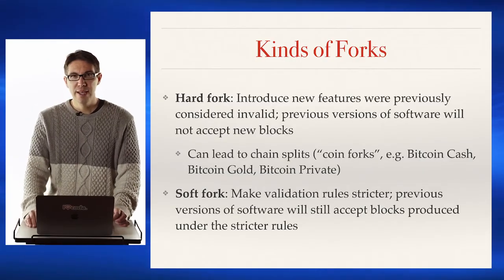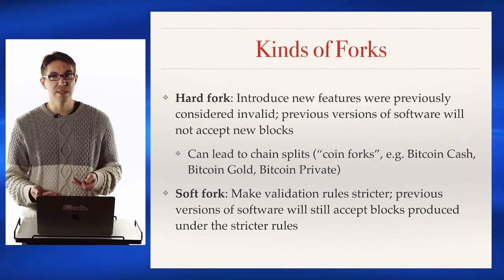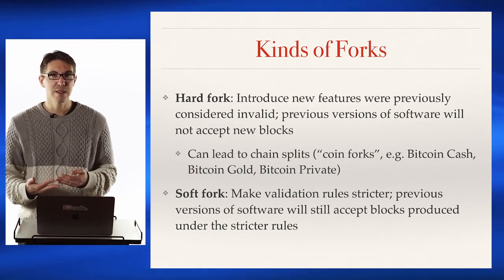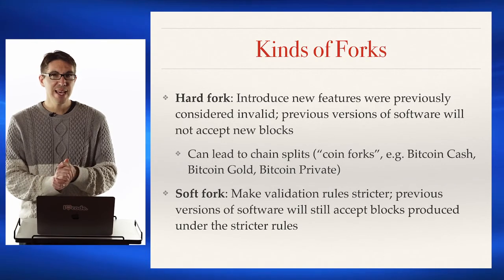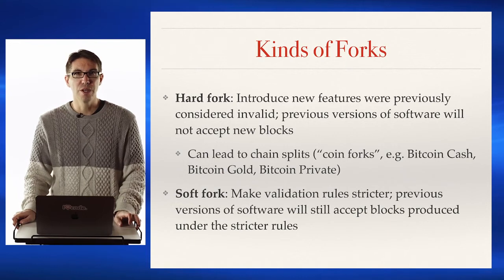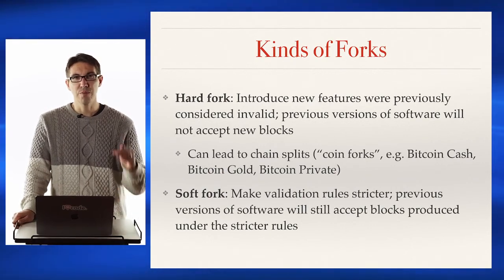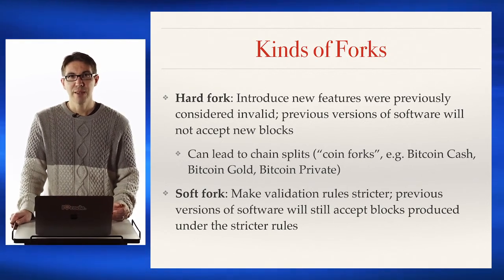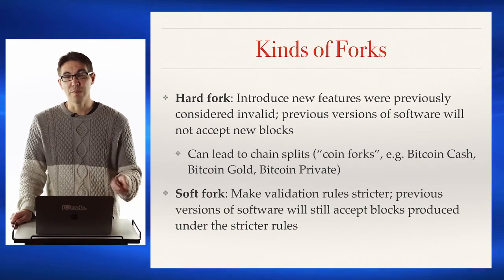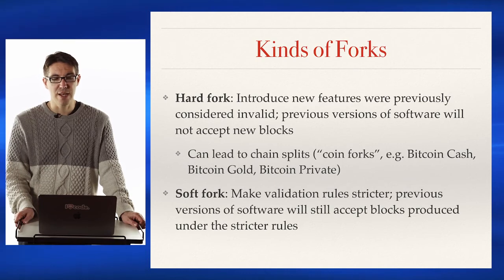We also see changes in the network in terms of forks. There are two kinds. A hard fork is where new features get added to the blockchain that were previously considered invalid. Previous versions of the software won't accept new blocks, but the past history is shared between the two blockchains — which can lead to chain splits. For instance, when Bitcoin Gold forked off from original Bitcoin, everybody who had one Bitcoin also had one Bitcoin Gold because up until the fork they shared history. Going forward, Bitcoin Gold used a different hashing algorithm that was supposedly ASIC-resistant to produce blocks, while the Bitcoin network continued using SHA-256 as it still does today.